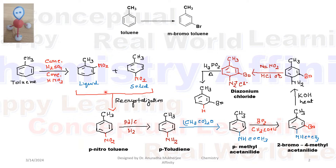Ortho-nitrotoluene is a liquid and para-nitrotoluene is a solid. We can perform crystallization to separate the mixture, giving us para-nitrotoluene.